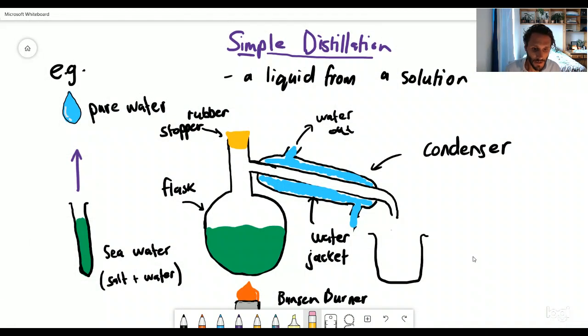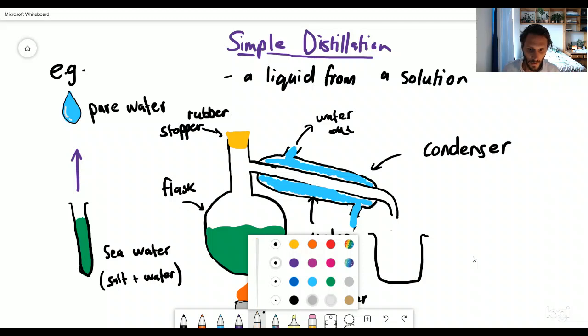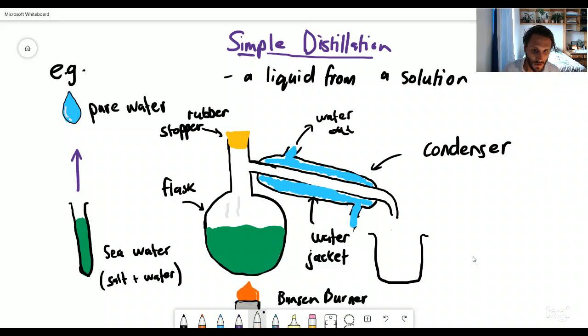So as you heat the solution of seawater, what's going to happen is water is going to reach a certain temperature, maybe 100 degrees, or not maybe, but exactly 100 degrees. And what effectively is going to happen here, let's just get a nice gray pen. What's going to happen here is the water is going to turn into a gas and is going to evaporate. So really important to use that word, we have evaporation taking place here.